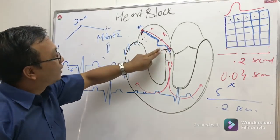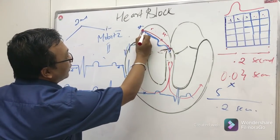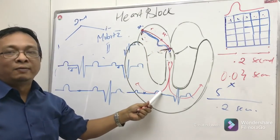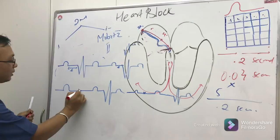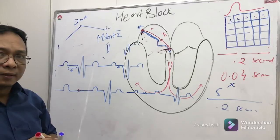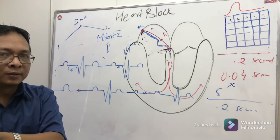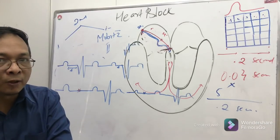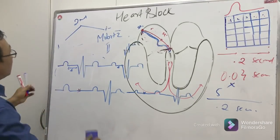In Mobitz Type 2, the AV node then suddenly blocks one impulse from reaching the ventricles, so one QRS complex is dropped. To recap: in Type 1, the PR interval increases progressively and then there is a dropped QRS; in Type 2, the PR interval is fixed and increased, and then there is a dropped QRS.